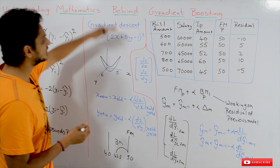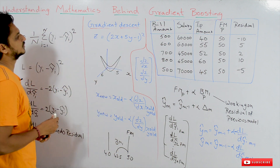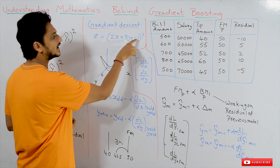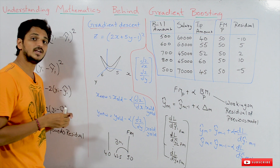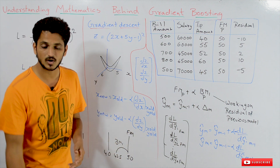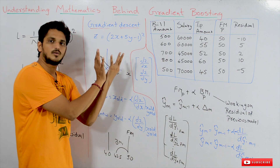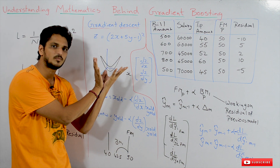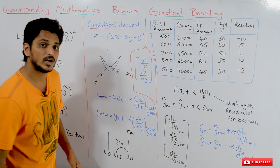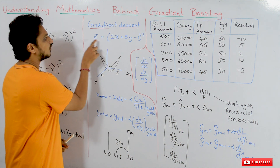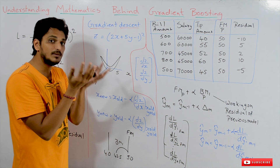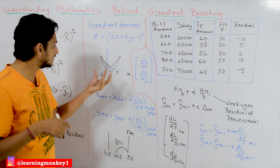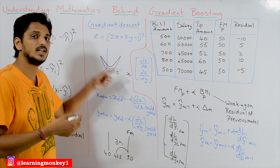Now let us refresh the concept of gradient descent to understand the mathematics required for gradient boosting. Consider an equation z equal to 2x plus 5y minus 1 whole square. This is an equation in a three-dimensional coordinate system and it looks like a parabola. What we are doing in gradient descent is finding at what values of x and y we have the minimum z value. That is the point we are identifying in gradient descent.